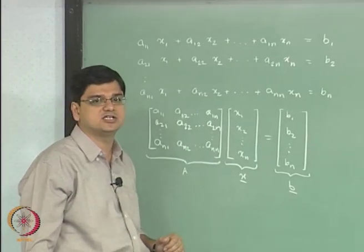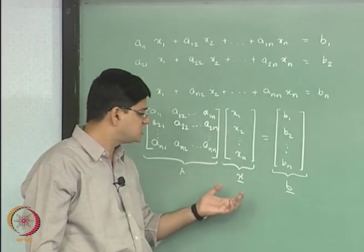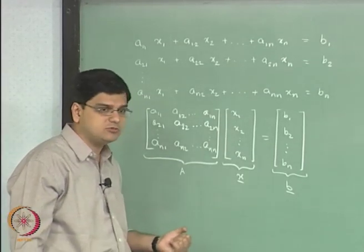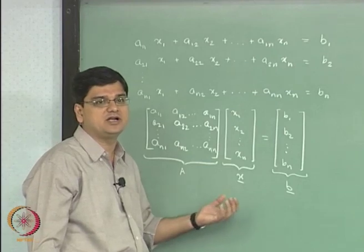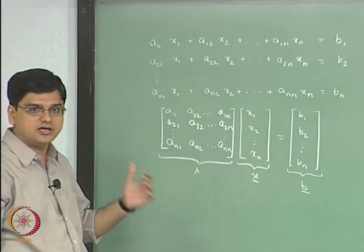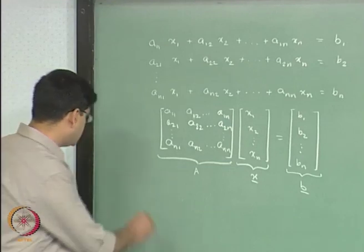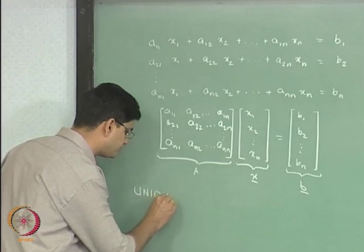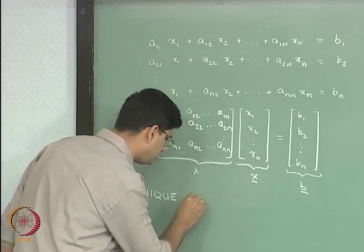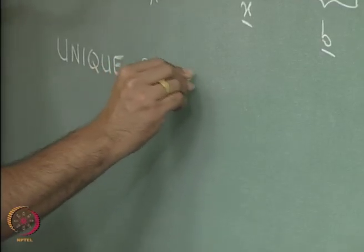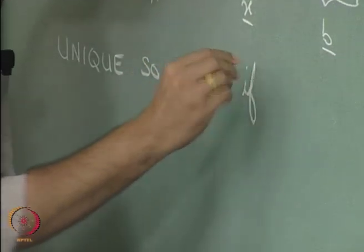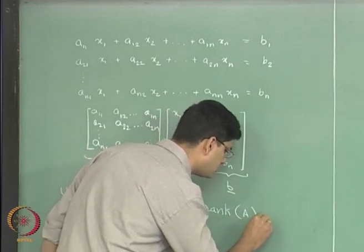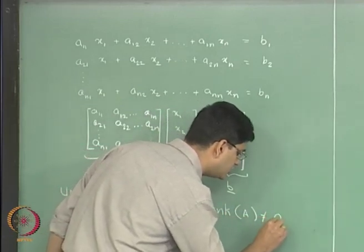The next question we ask ourselves is: when does this system of equations have a unique solution, when does it have no solution, and when does it have multiple solutions? What we had seen in the previous lecture is that the system of linear equations has a unique solution if the rank of A is not equal to 0.